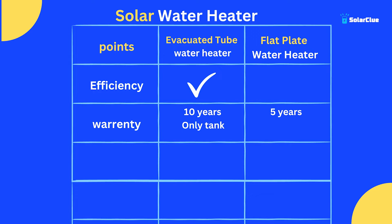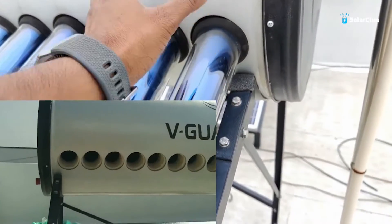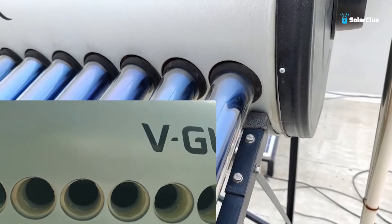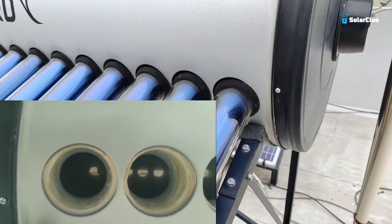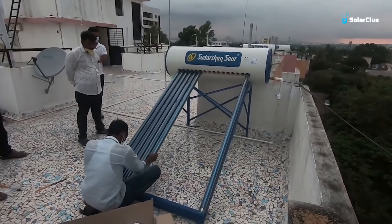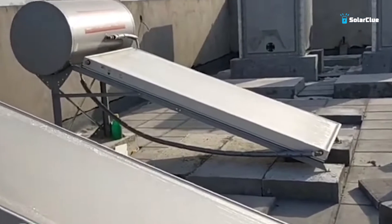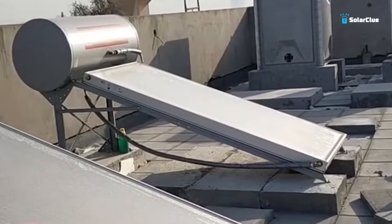Second point — warranty: the tubular model has 10-year warranty on the tank, while a panel model has one to five years on the full system. Tubular models also handle water hardness better, meaning they resist corrosion longer. On price, tubular models are significantly cheaper — panel models are 1.5 to 2 times more expensive. For example, if a tubular model costs ₹30,000, a panel model could be ₹50,000–₹60,000.